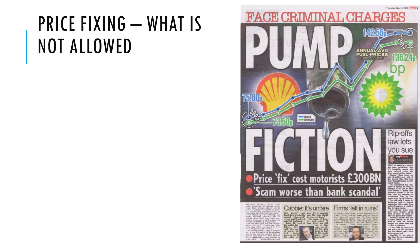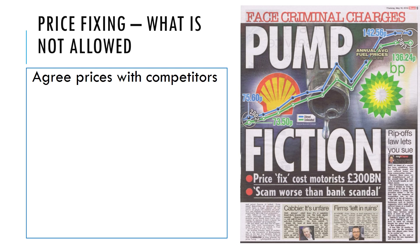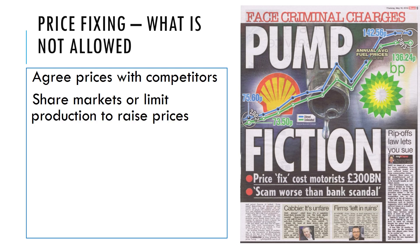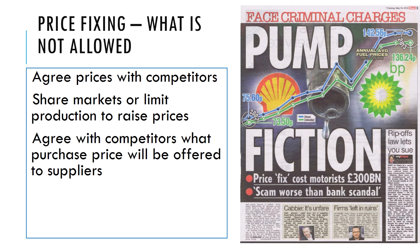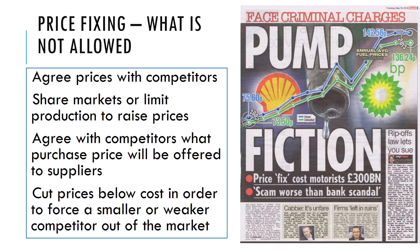Businesses are not allowed to collude with each other to try and charge a high price to customers. You're not allowed to agree prices with competitors, or divide and share up markets — for example, one business takes the north of the city and the other takes the south. You're not allowed to work with a competitor to determine what prices you'll pay your suppliers. You're also not allowed to use predatory pricing — cutting prices below cost in order to force a smaller or weaker competitor out of the market.